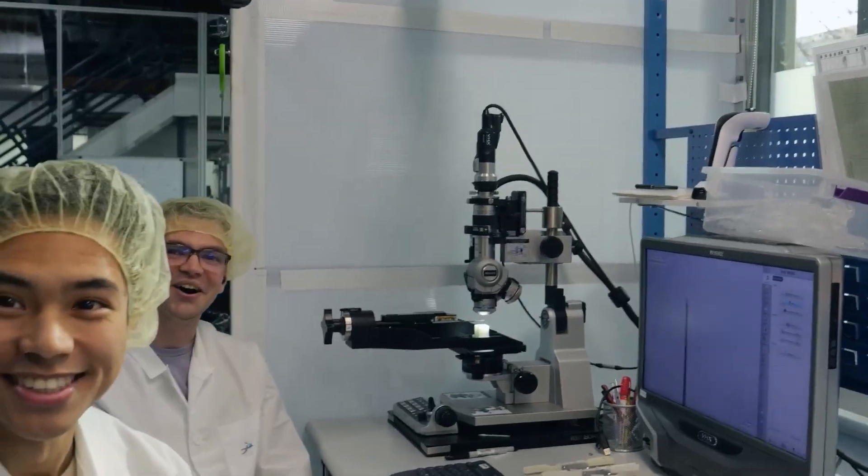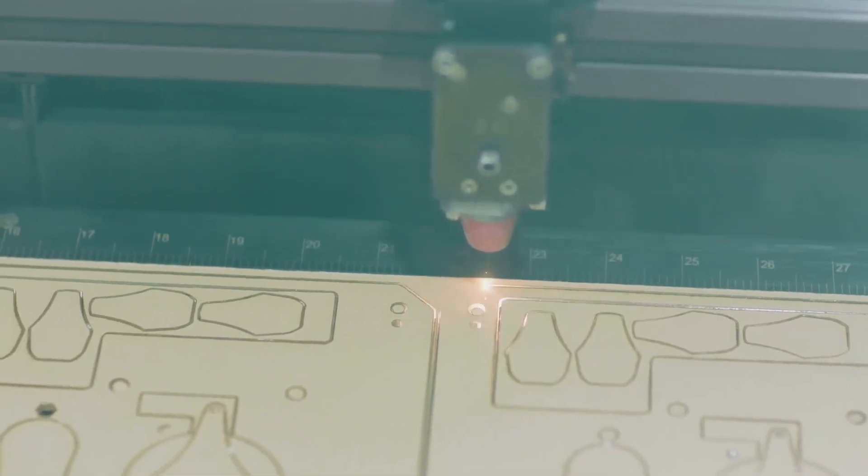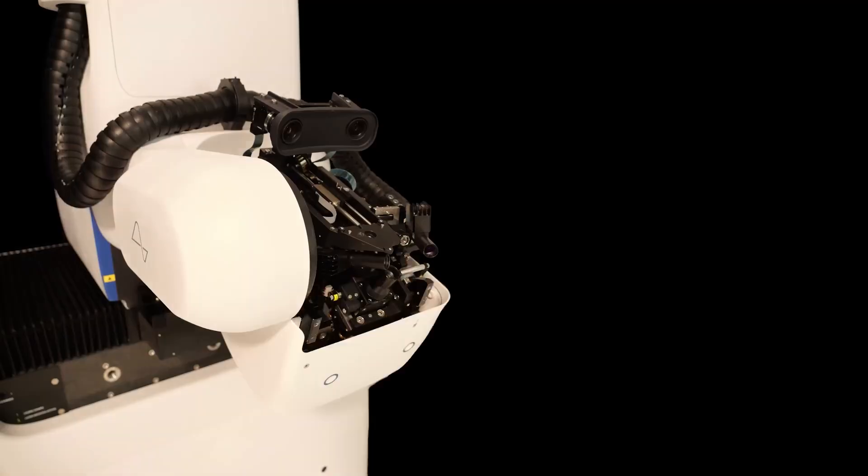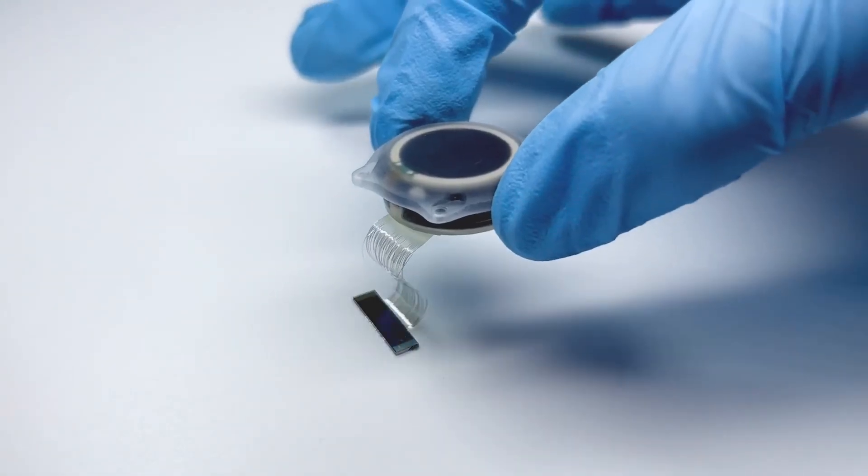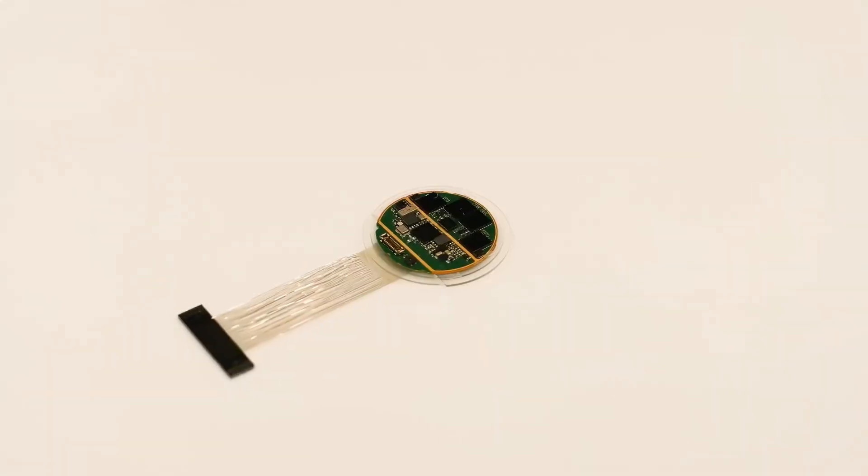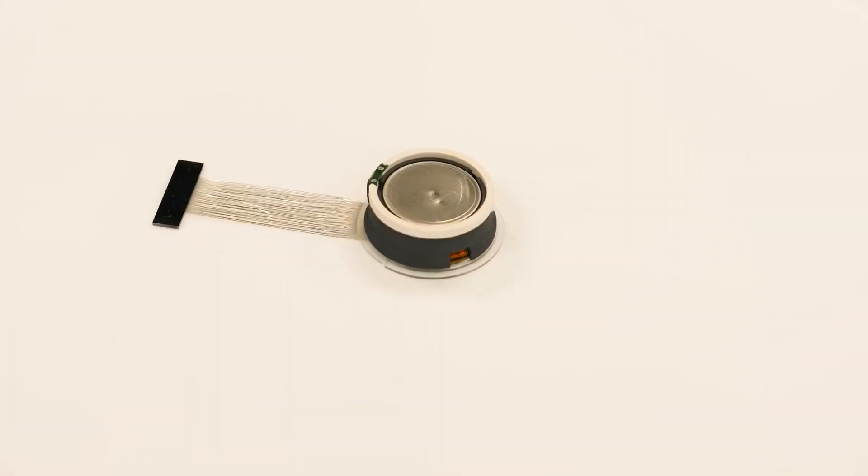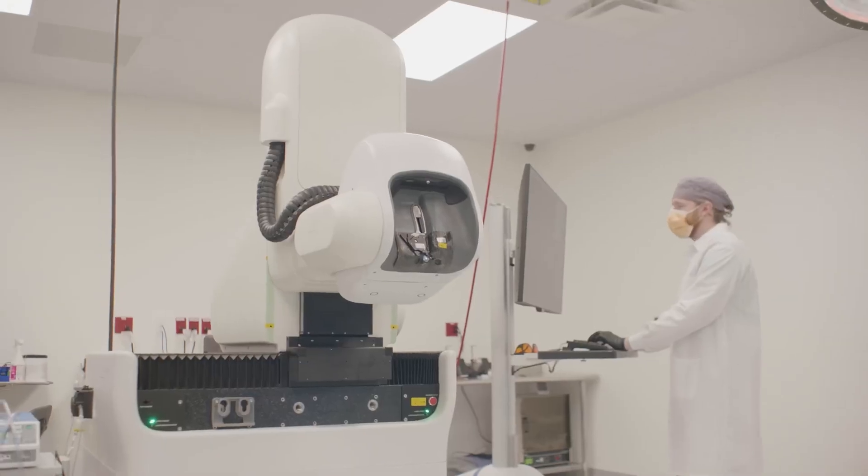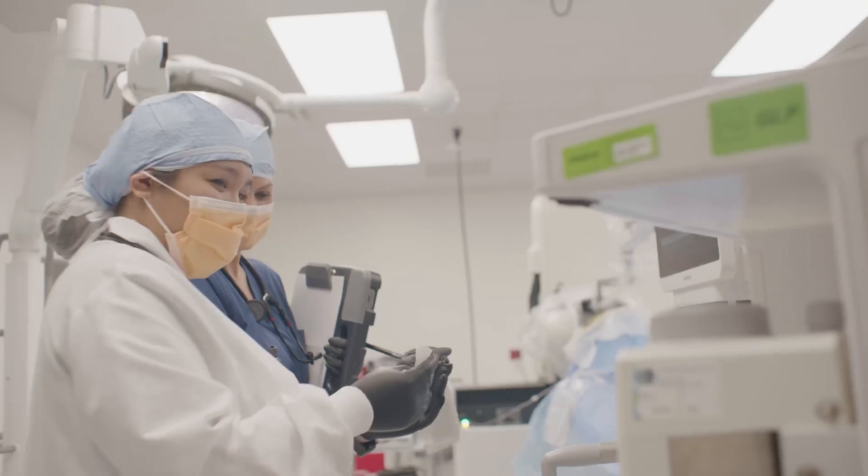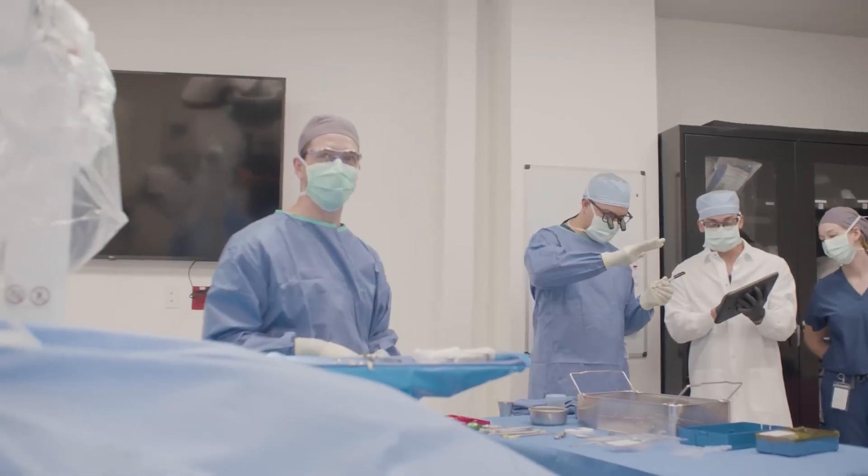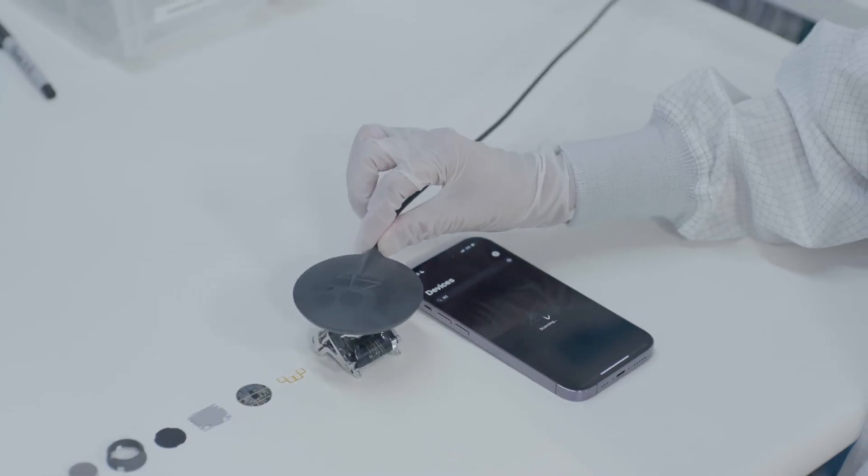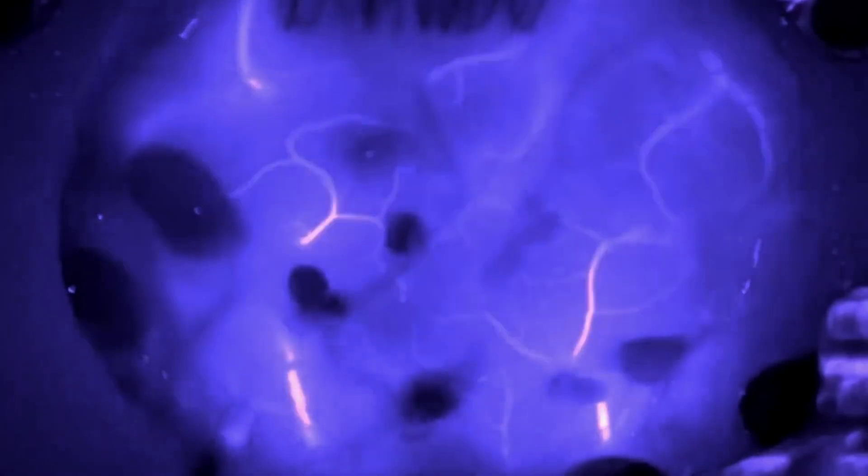Human trials for the Blindsight device are slated to commence in 2025, building upon promising results observed in preclinical animal studies. Elon Musk has even suggested that future iterations of Blindsight could potentially offer visual capabilities that surpass natural human vision, including the ability to perceive infrared, ultraviolet, and even radar wavelengths, hinting at a future where technology could augment human senses in profound ways.